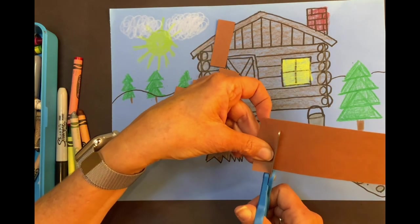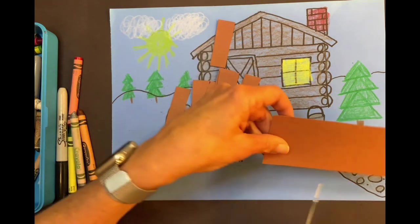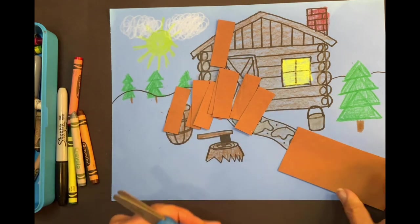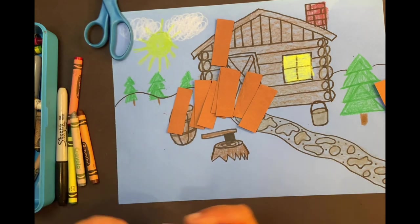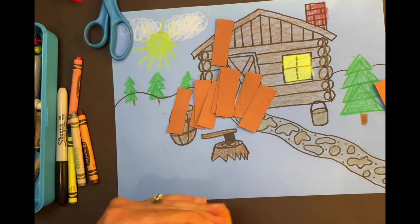The fence for Abe Lincoln's cabin is going to be in the very front. That might be enough, huh? All right. Do you have your glue stick nearby? So watch, Ms. Roz.